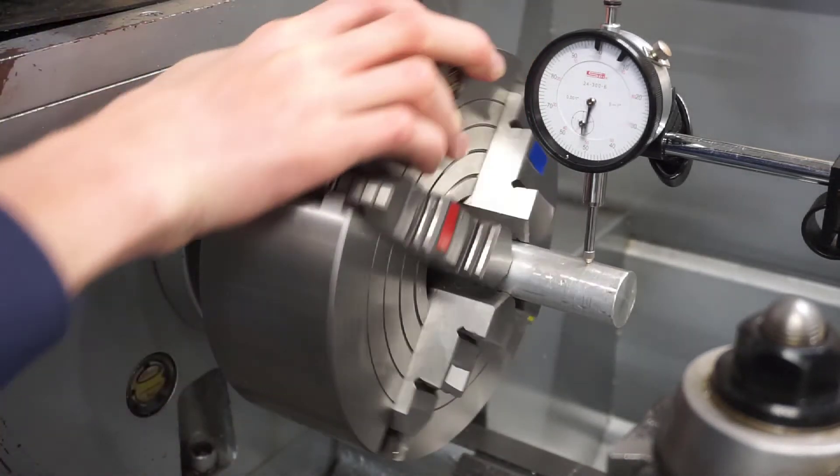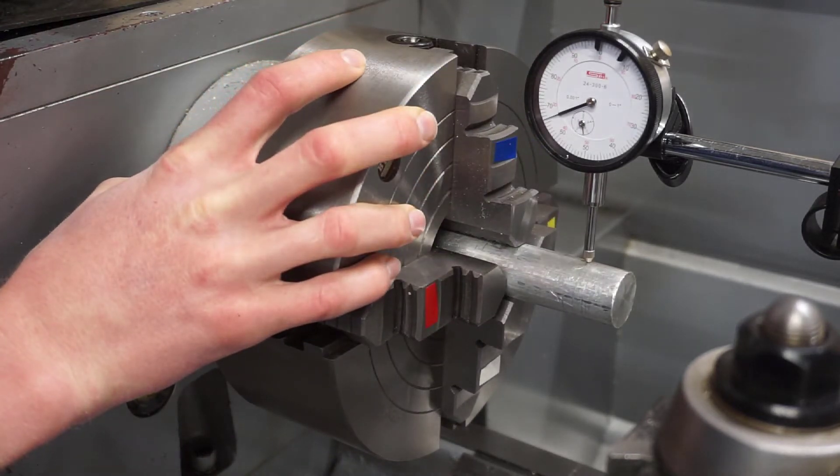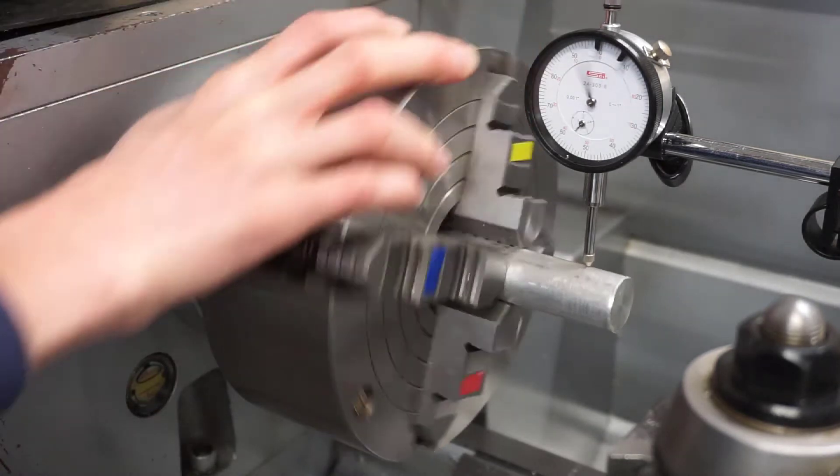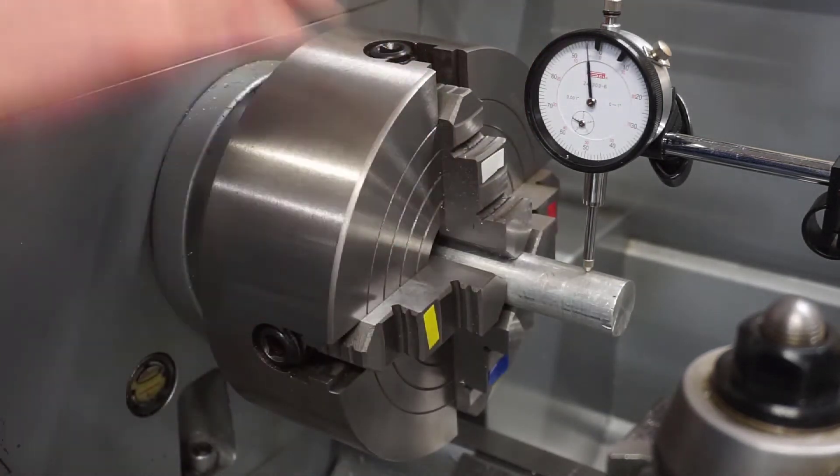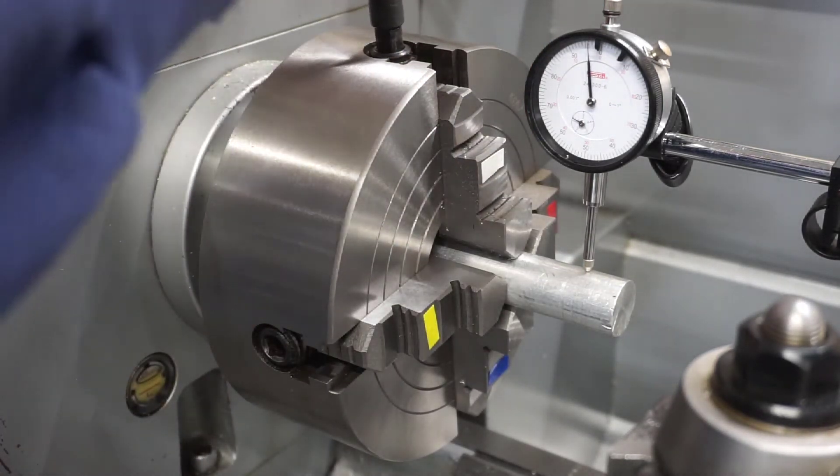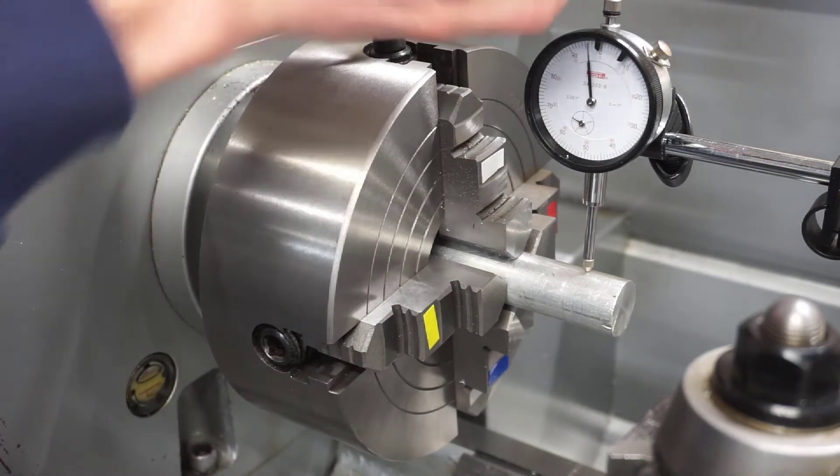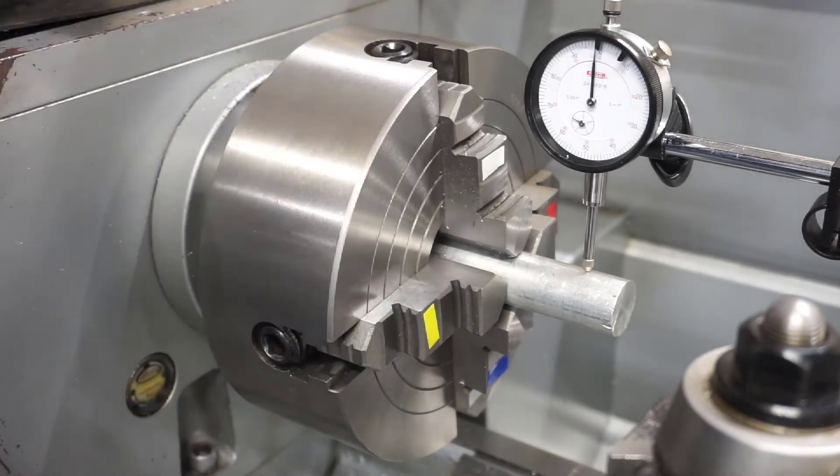During this whole operation, what we will do is move these jaws as pairs. So we'll move the blue and the white together, the red and the yellow. Now as we rotate this, you're going to notice that it has over a hundred thousandths of runout. That's not uncommon the first time that you visually align it.